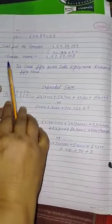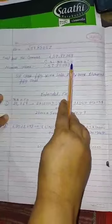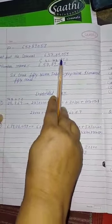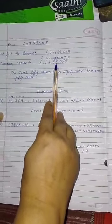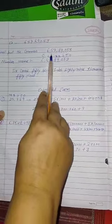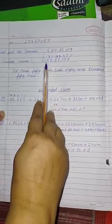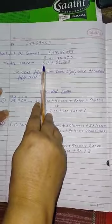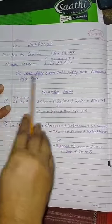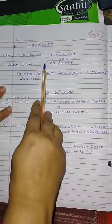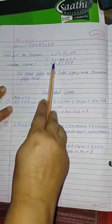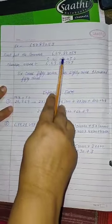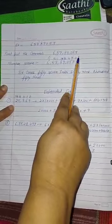Number name. How we read the numbers. Ones, tens, hundred, thousand, ten thousand, lakh, ten lakh, crore. कैसे हैं, आप number को read करेंगे? Look here. Six crore, 57,089,053.